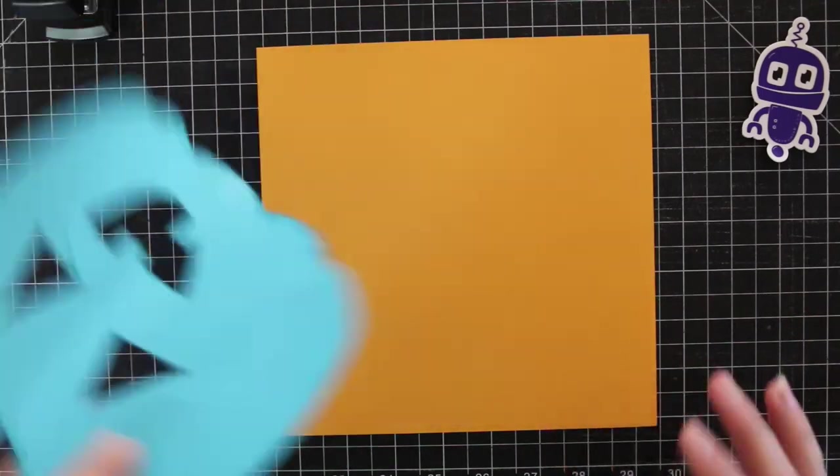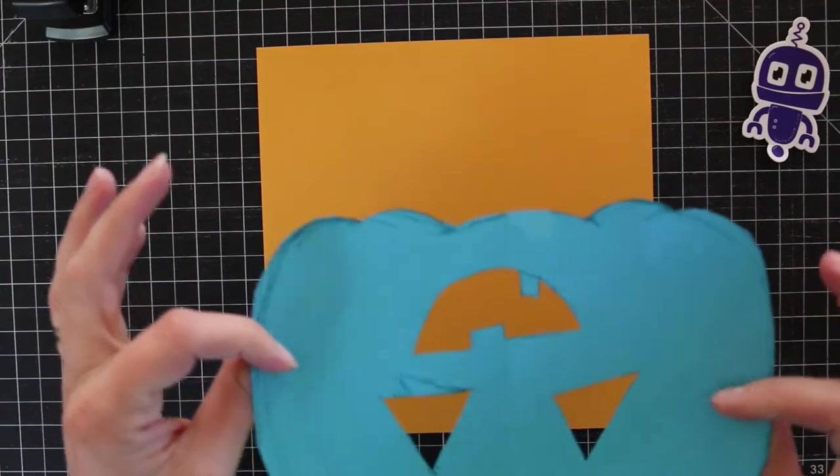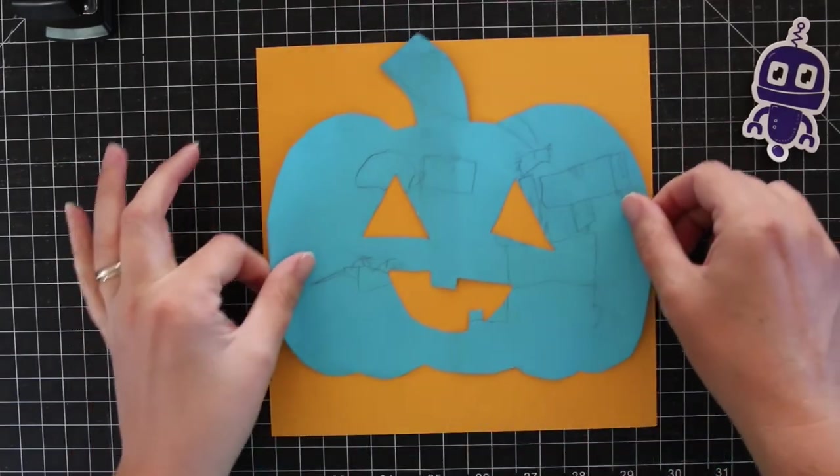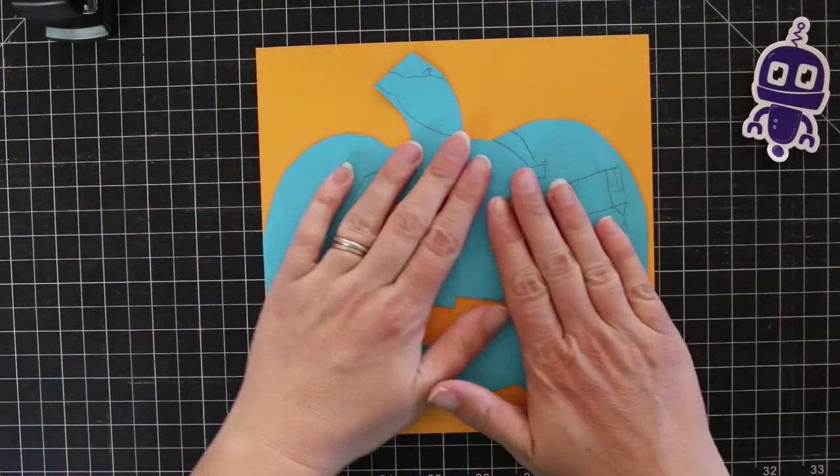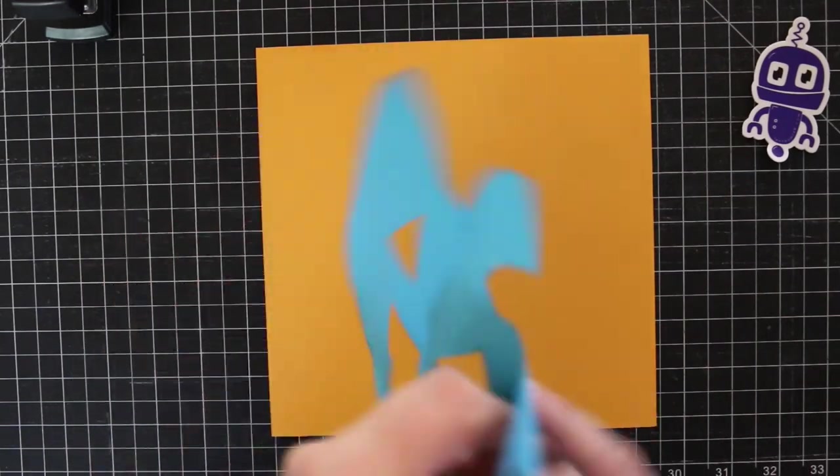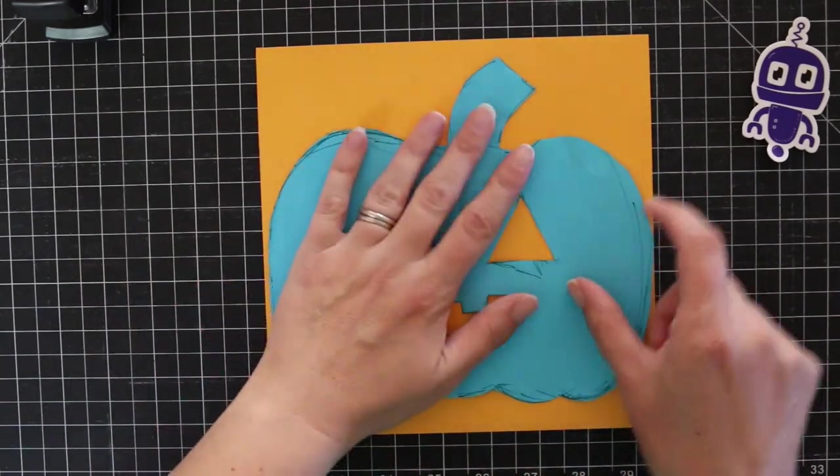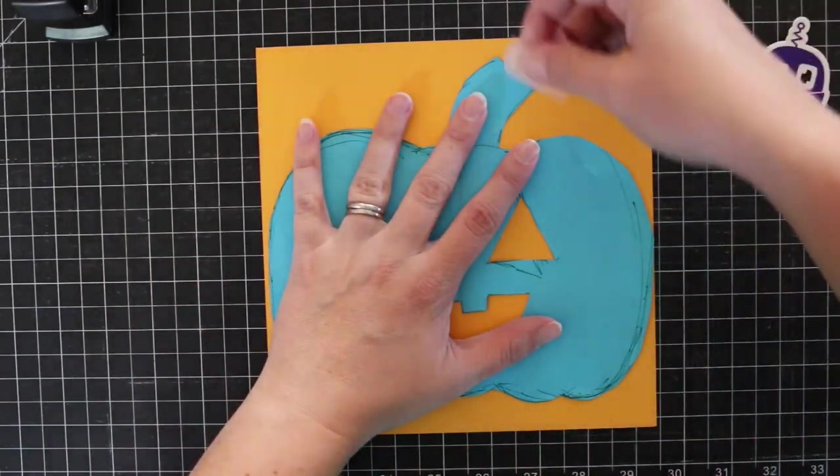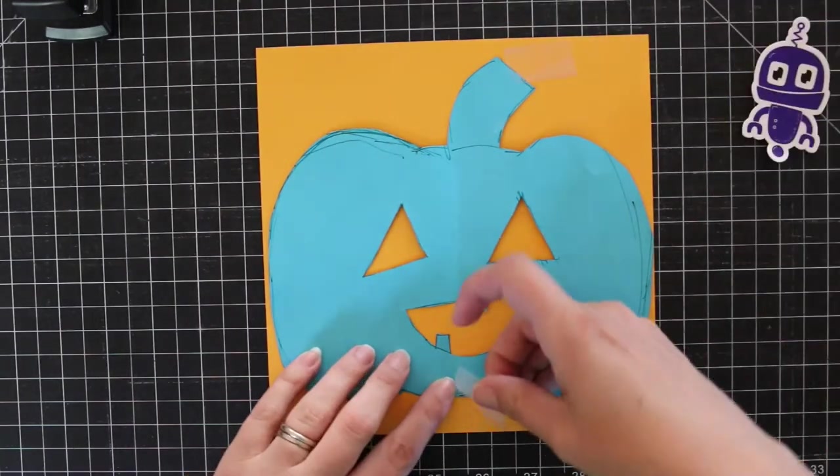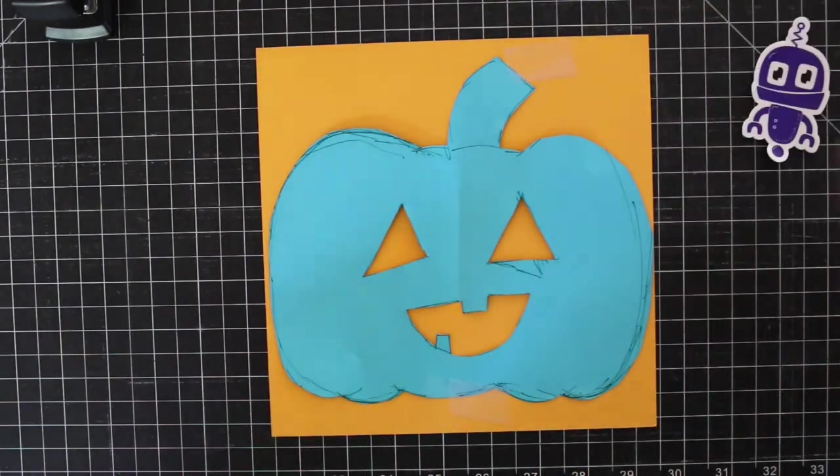I recommend that you get a template sheet or a piece of scrap paper so that you can draw out pumpkins until you find one you're interested in. And then you're just going to tape it down in order to keep it from moving around as you try and sketch it out.